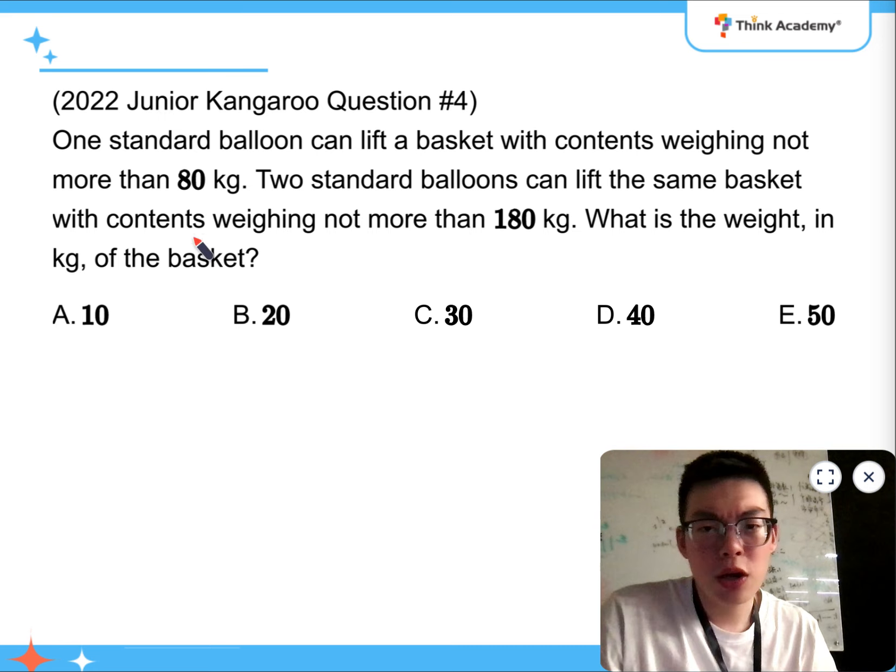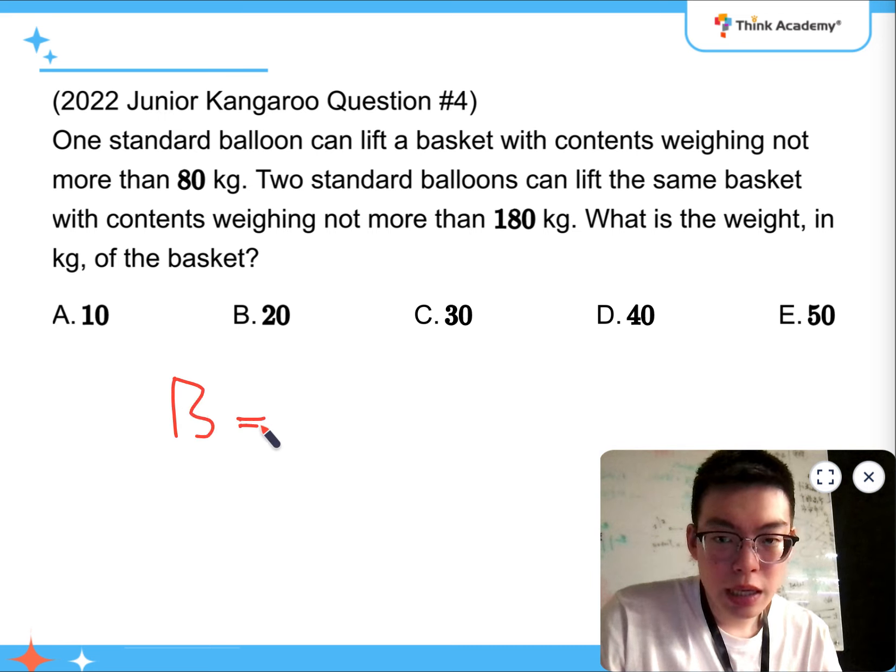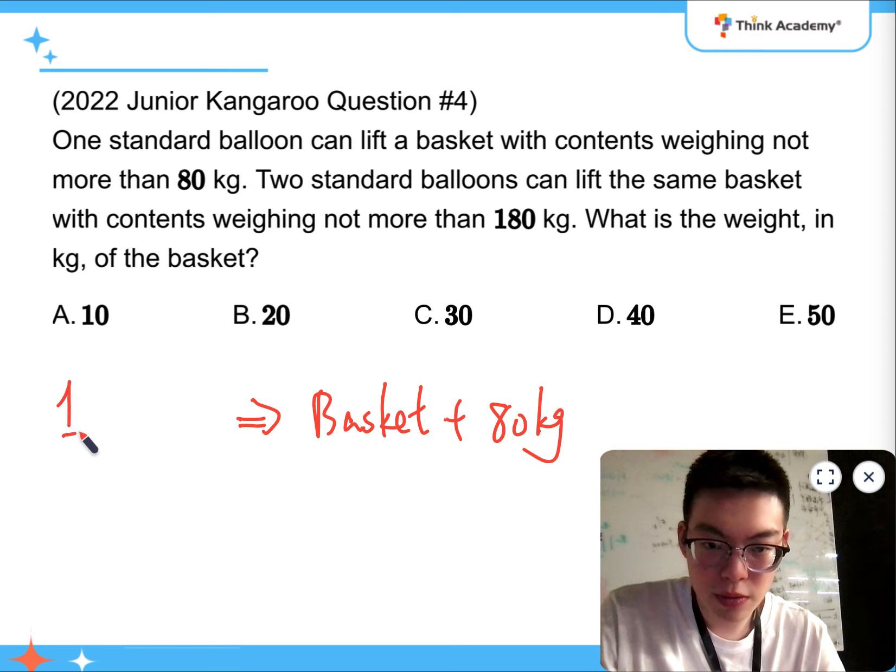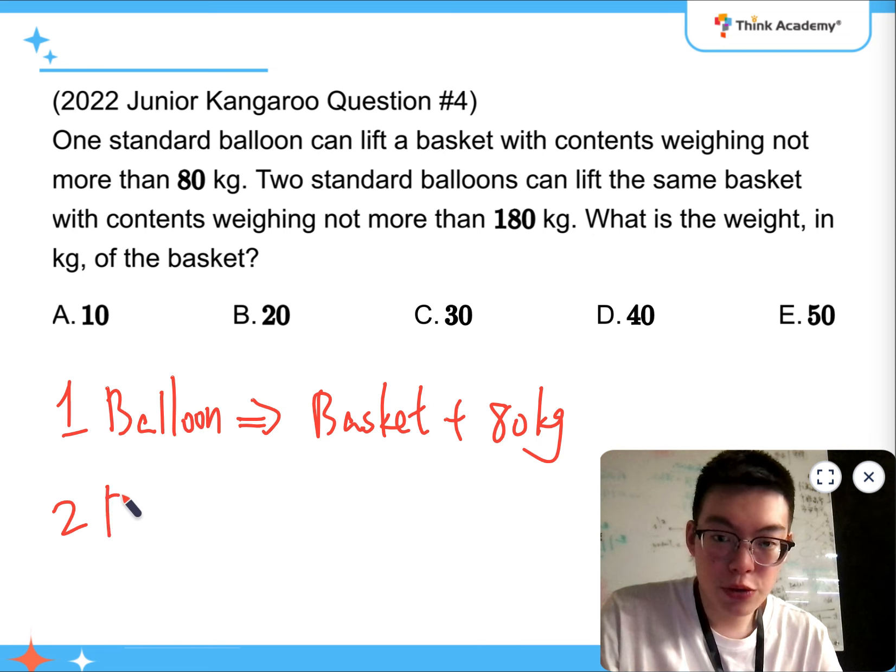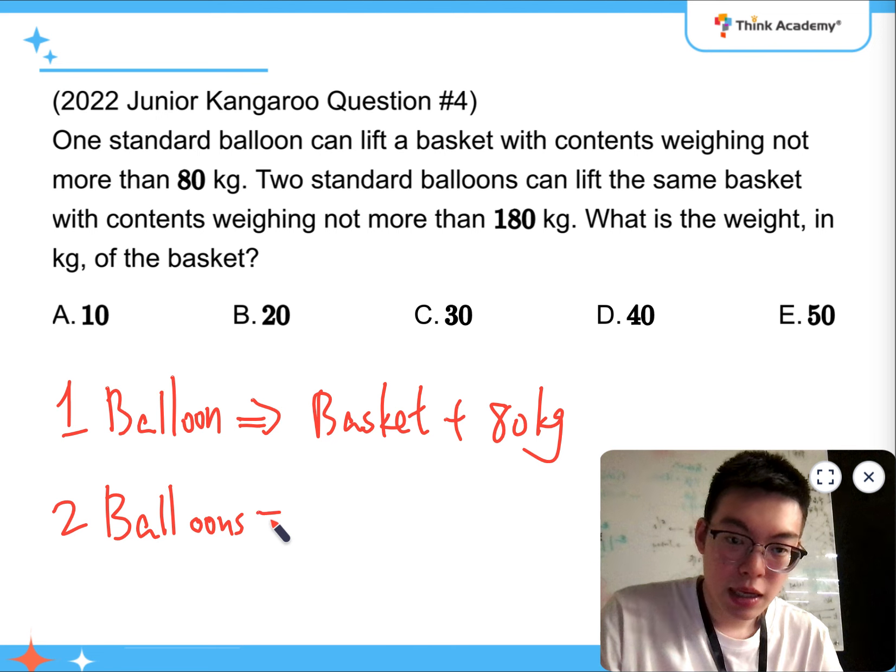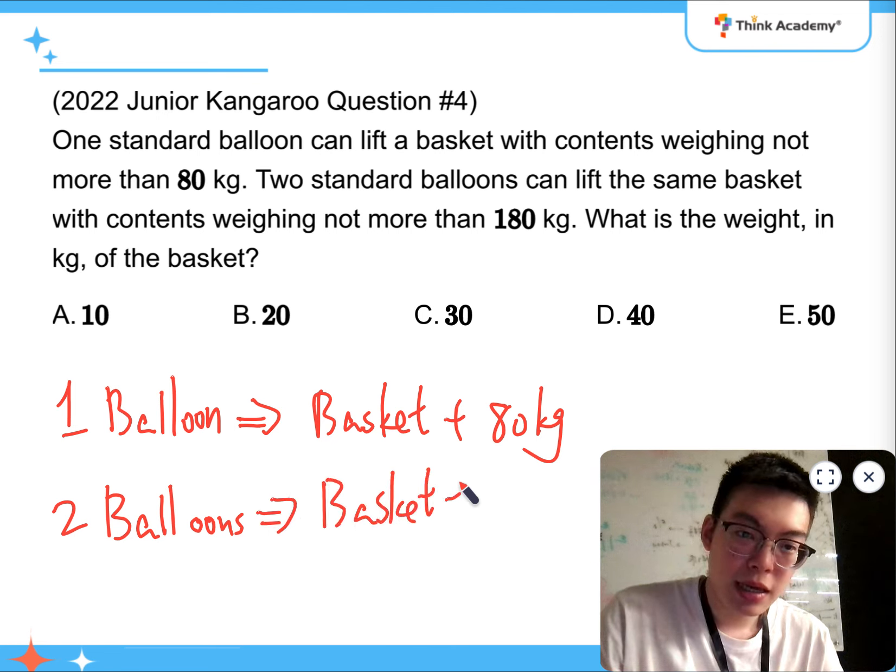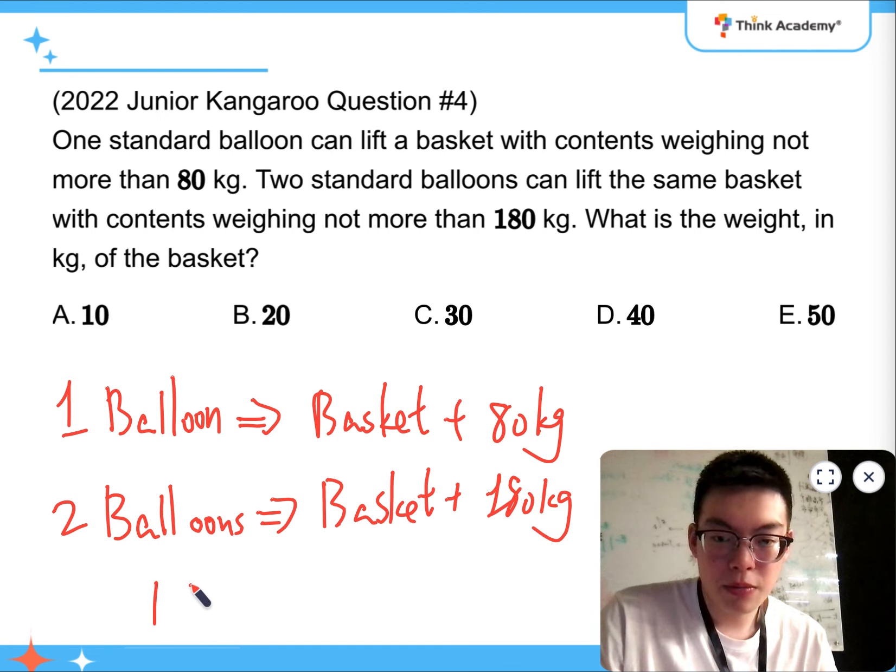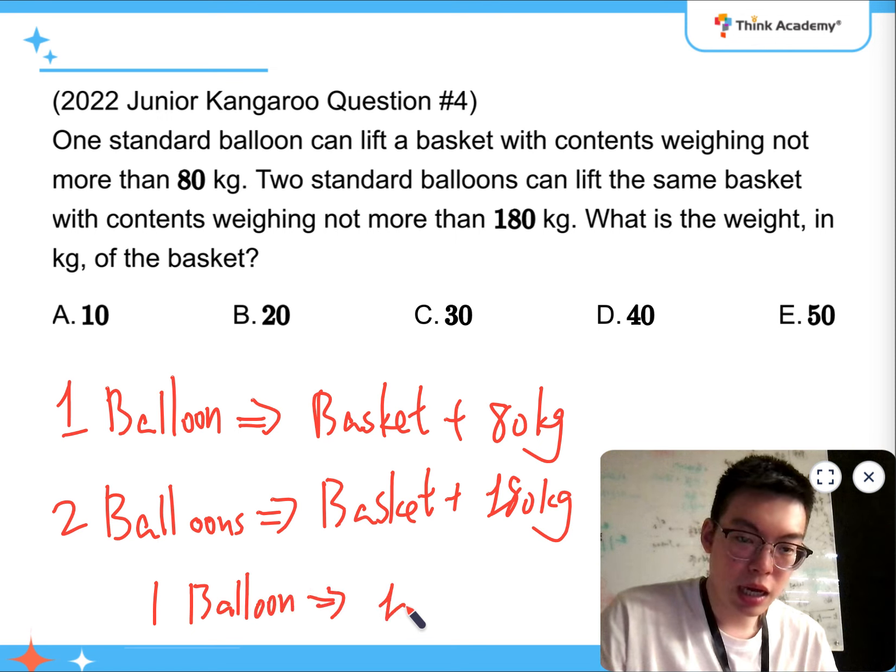As for question 4, one standard balloon is going to lift the basket adding 80 kilograms. That's a balloon. 2 balloons is going to lift a basket and 180 kilograms. So, it means that 1 balloon can lift 100 kilograms,